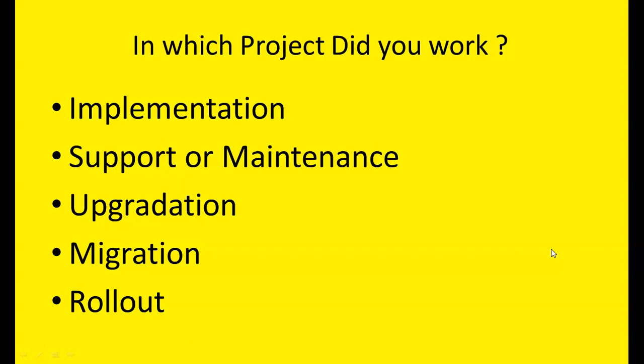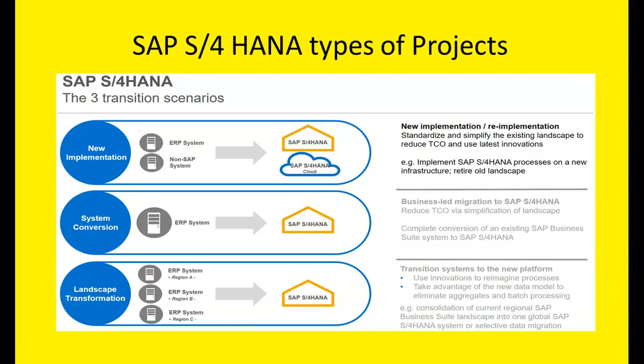I'm going to explain all these different types of projects in another session — you can search our channel for it. What are the different HANA types of projects? In implementation of SAP S4 HANA, there are three different types of scenarios: new implementation, system conversion, and landscape transformation.